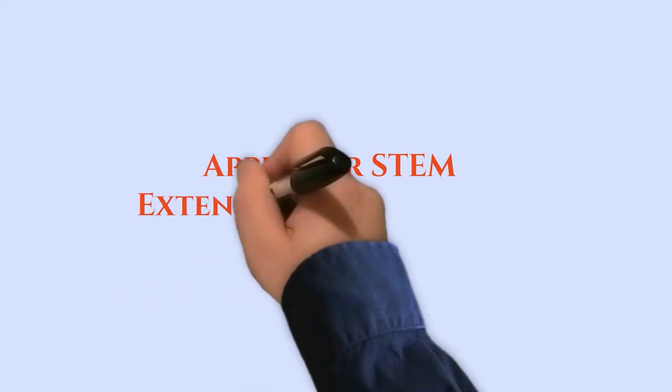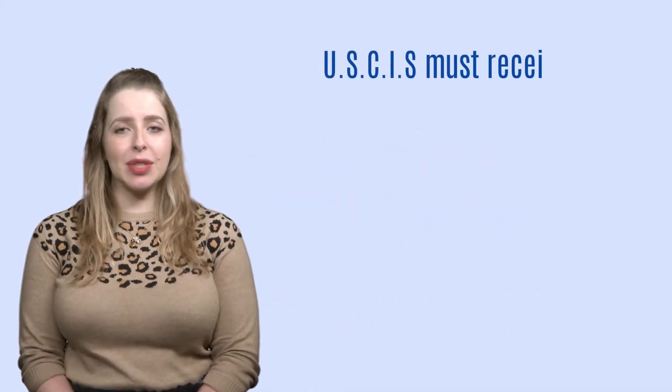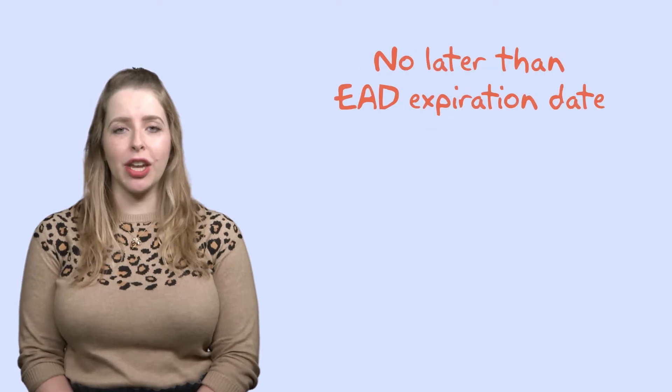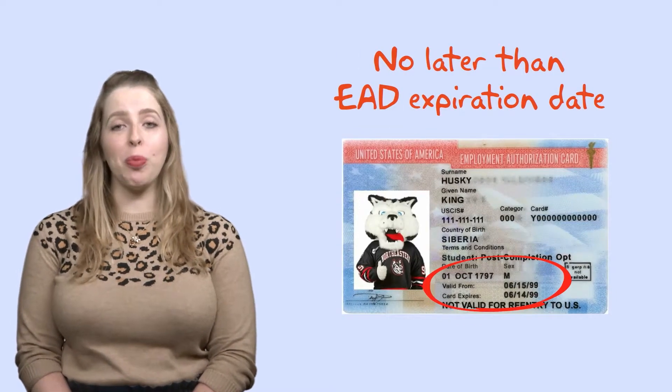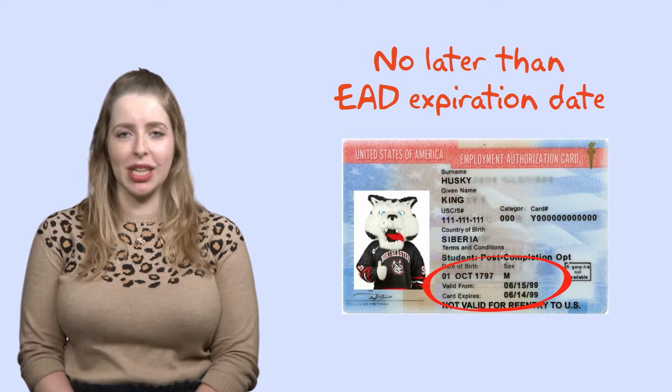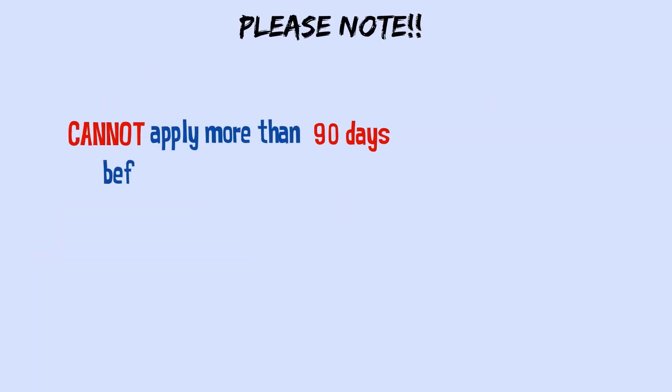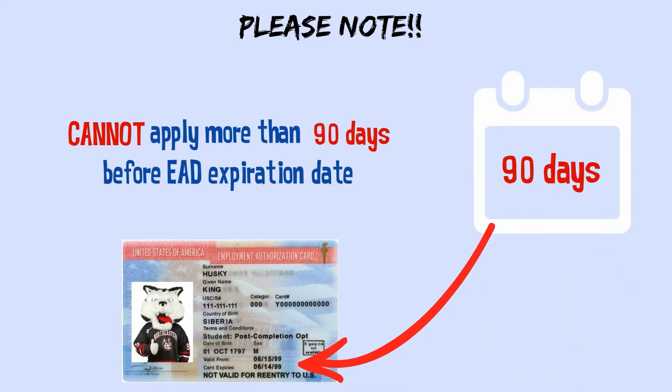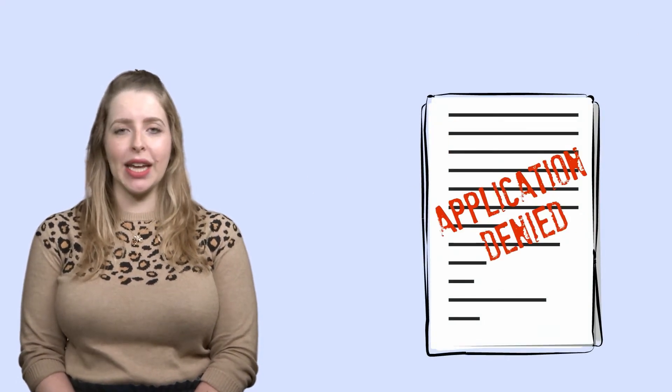The second step is to apply for the STEM extension with USCIS. USCIS must receive a STEM application no later than the post-completion OPT EAD expiration date. Please note you cannot apply more than 90 days before the post-completion OPT EAD expiration date. If you do not submit the application in this window, your application will be denied by USCIS.